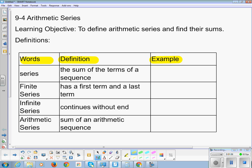The first word we're going to define is a series. It is the sum of the terms of a sequence. So we've been looking just at the sequences. If we have the sequence 5, 10, 15, 20, the series would be 5 plus 10 plus 15 plus 20. And if you find the sum, the actual sum of that series is 50.